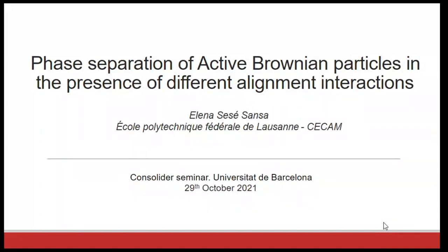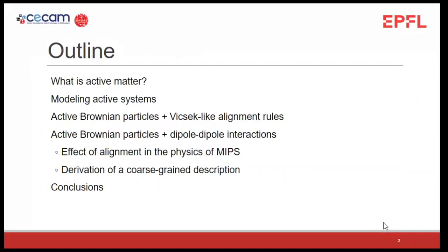Here is the outline of the presentation. We study active matter. First I will start by defining what active matter is, then I will present some models we use. I will introduce well-known models used in the active matter community, then explain what happens to the physics of active Brownian particles when you add different alignment rules. I will show results from simulations and derive a coarse-grained theory, and finally state our conclusions.